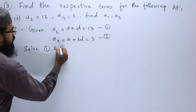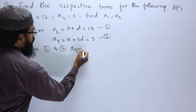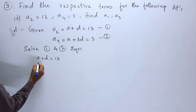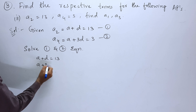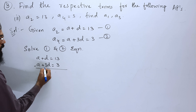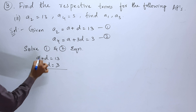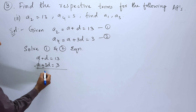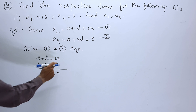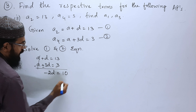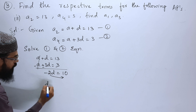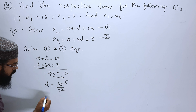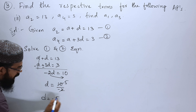Solving first and second equations: A plus D equals 13, and A plus 3D equals 3. Changing signs and subtracting, A cancels. 1D from 3D gives minus 2D equals 13 minus 3, which is 10. So D equals 10 divided by minus 2, therefore D equals minus 5.